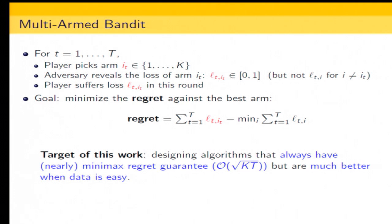The minimax regret of this multi-armed bandit problem is already well understood. The target of this work is to have an algorithm that always achieves the minimax regret guarantee, but when the losses exhibit some kind of easiness, our regret bound can be much better. This kind of adaptive bound is more studied in the full information setting and less understood in the multi-armed bandit setting.